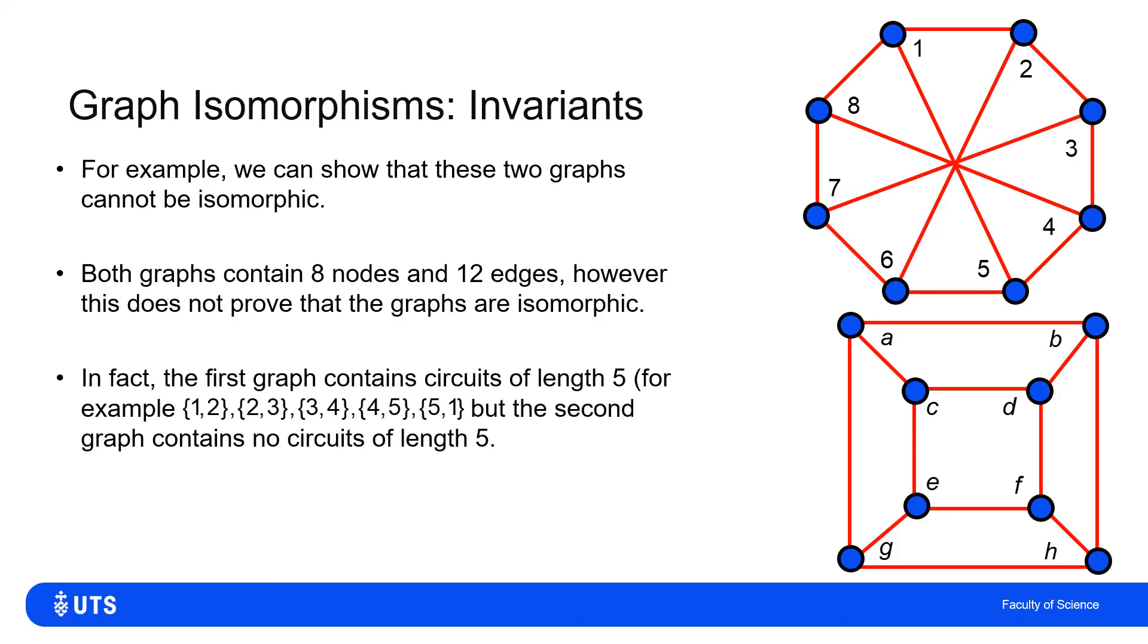But the first graph has circuits of length 5, because I can go 1 to 2, 2 to 3, 3 to 4, 4 to 5, and then cut across to the middle, 5 to 1. So I can get from node 1 back to node 1 with a path length of 5.